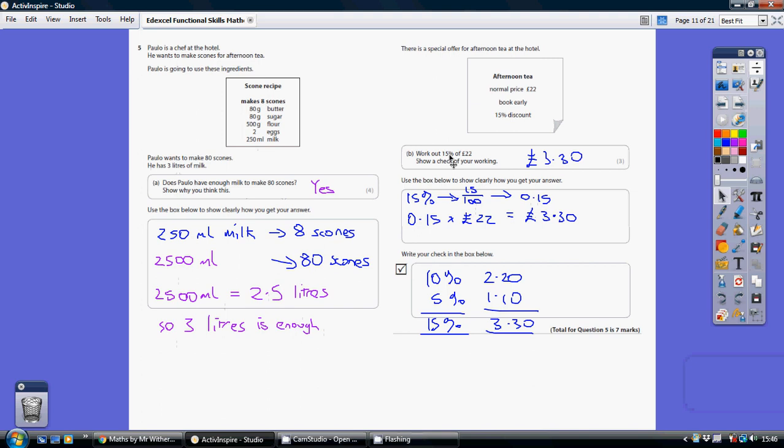We want 15% of 22. So, take your multiplier, your 0.15, times that by 22, and that gives you £3.30. So, £3.30 is 15% of 22.